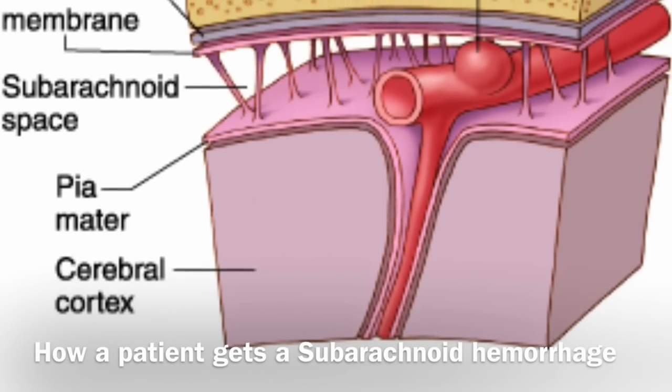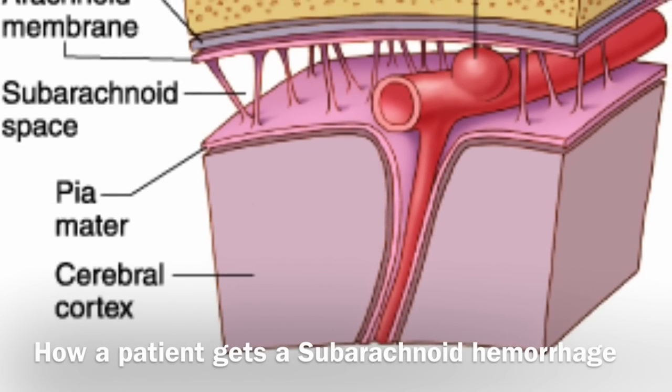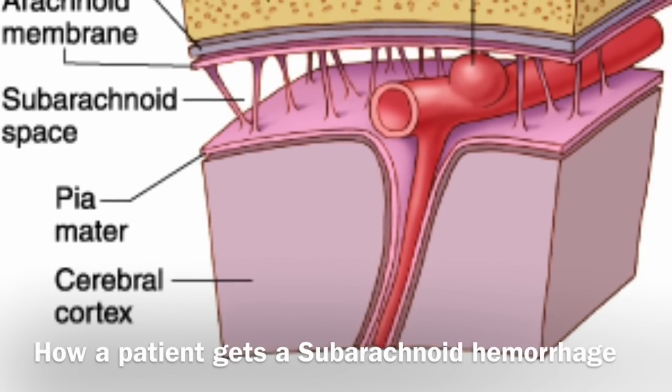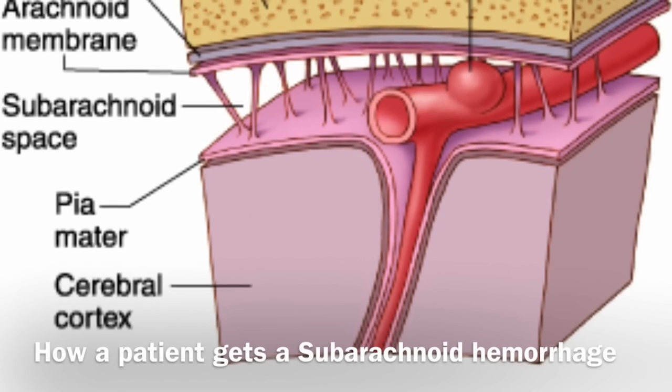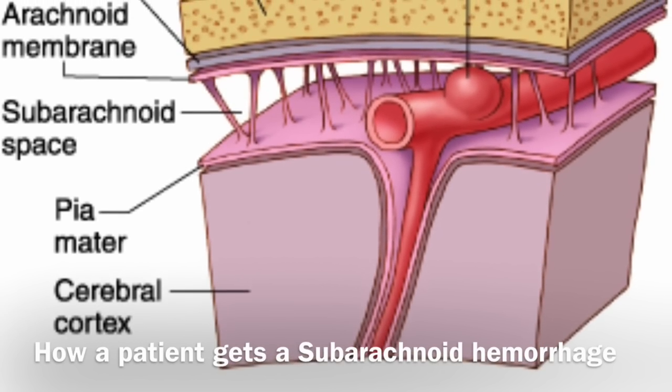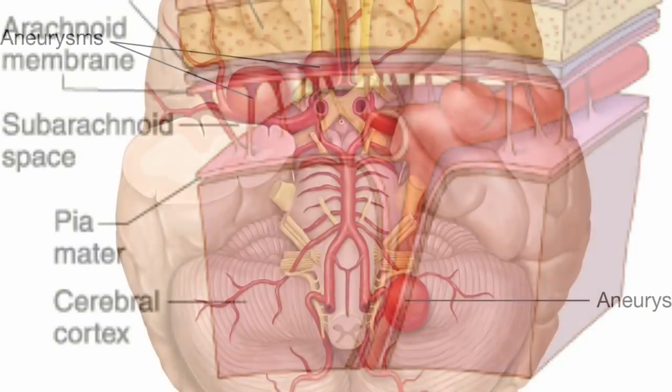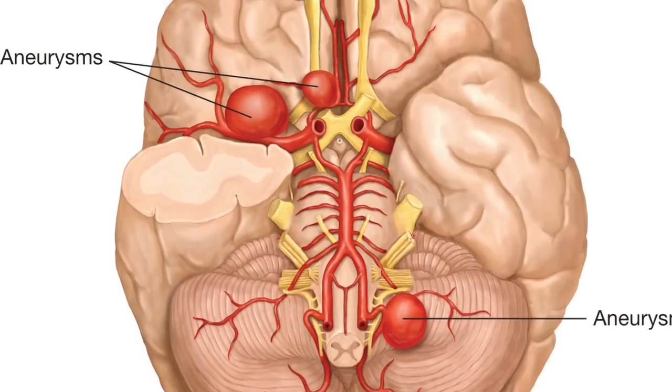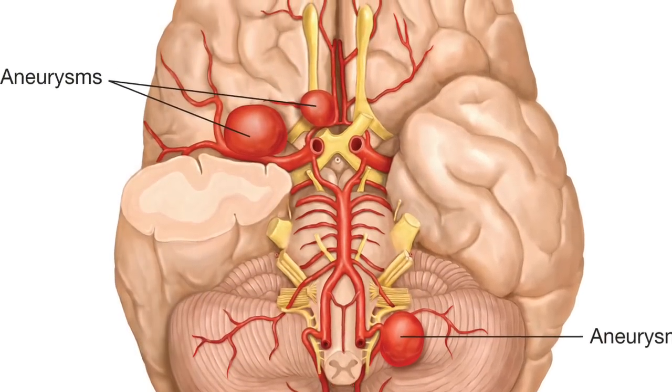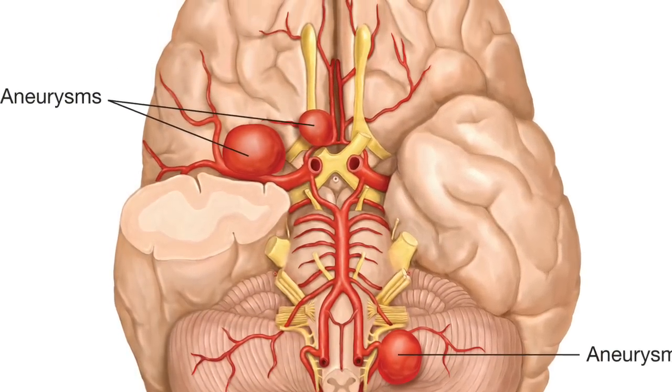The same microdiagram, but the artery contains an aneurysm. That's why when a cerebral arterial aneurysm ruptures, a patient gets a subarachnoid hemorrhage.